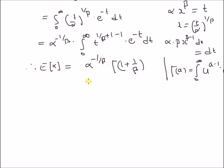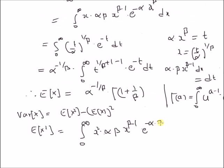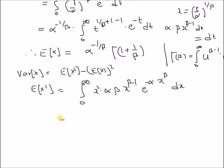Next, we want to find the variance of the Weibull distributed variable x. The variance of x equals E[x^2] minus (E[x])^2. We already know the expectation, so we need to find the second moment E[x^2], which by definition equals the integral from 0 to infinity of x^2 * alpha * beta * x^(beta - 1) * e^(-alpha * x^beta) dx.